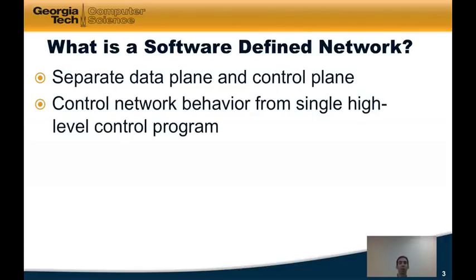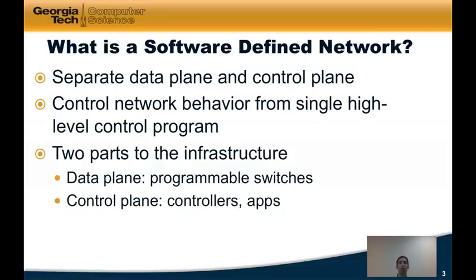The separation of the network's data plane and control plane allows a network operator to control network behavior from a single high-level control program. There are typically two parts to SDN infrastructure: the data plane — that is, programmable switches — and the control plane — that is, the controllers and applications that control how the data plane forwards traffic.